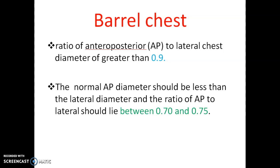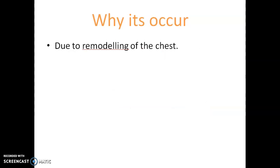Barrel Chest may be defined as a ratio of anterior-posterior to lateral chest diameter of greater than 0.9. The normal anterior-posterior diameter should be less than the lateral diameter, and the ratio of anterior-posterior to lateral chest should lie between 0.70 and 0.75.